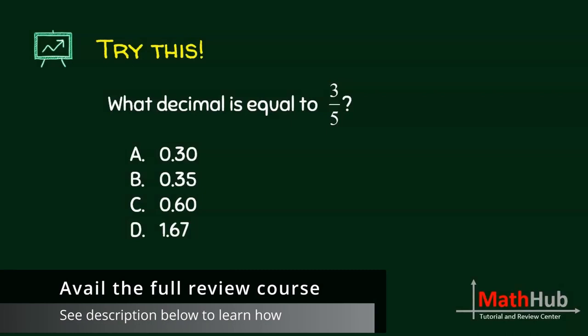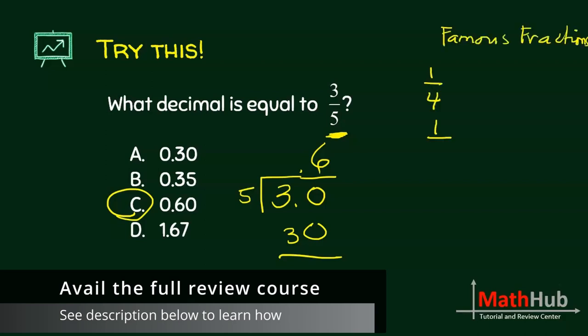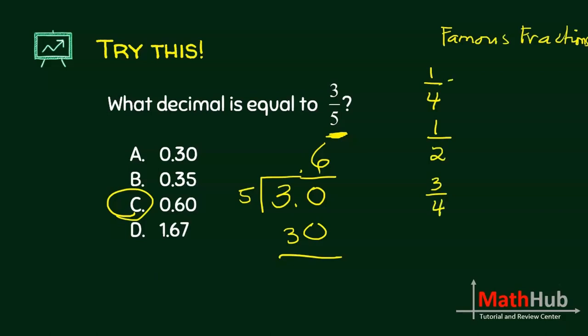What decimal is equal to 3 fifths? So you convert 3 fifths to decimal by dividing the numerator with the denominator. This is 6, but 0.6 is the same as 0.60. Now class, remember that it's important that you know the famous fractions and the corresponding decimals. 1 fourth is 0.25, and 1 half is 0.5.